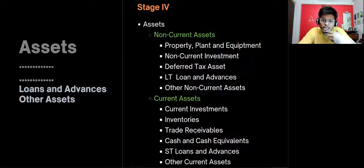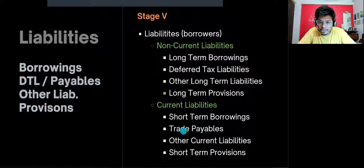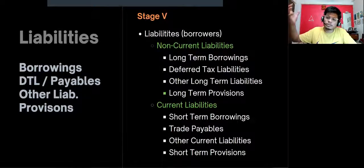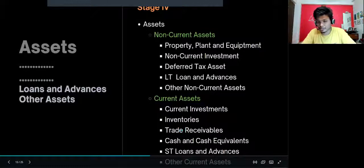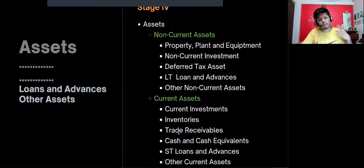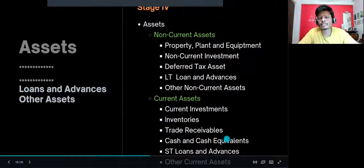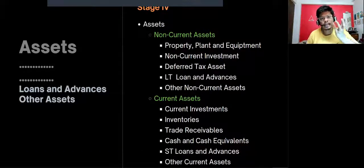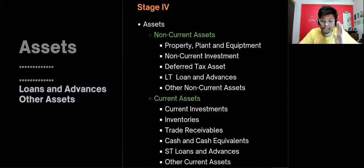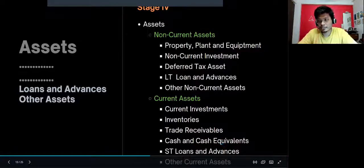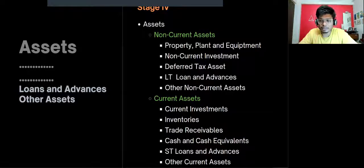Inventories are current assets. Trade receivables, similar to trade payables but on the opposite side: if trade payables are money I owe my supplier, trade receivables are money my customer owes me — I've delivered goods and told the customer to pay me a month later. Cash and cash equivalents include cash, bank balances, and any short-term highly liquid investments. Cash is always a current asset because you can transact with it at any time.